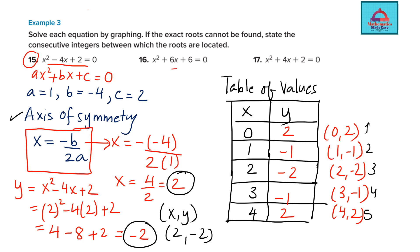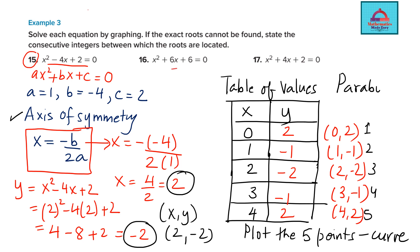Plot these 5 points on the x and y axis on your graph sheet and connect them to get the curve. Since these are quadratic equations, the graph will be in the shape of a parabola. From the graph we will look at the x-intercepts and answer the second part of the question — stating the consecutive integers between which the roots are located.